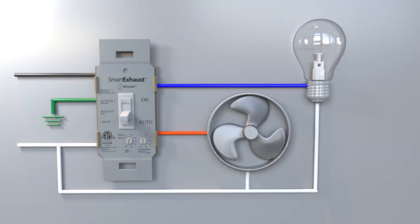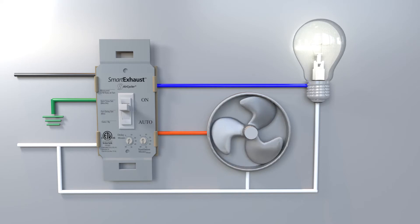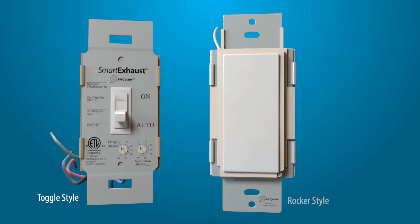By combining the fan switch with the light switch, you can be confident that the exhaust fan is turned on each time someone enters the bathroom and turns on the light, just like an occupancy sensor. The Smart Exhaust is available in two models, a toggle-style switch and a rocker-style switch. Wiring is the same for either switch.